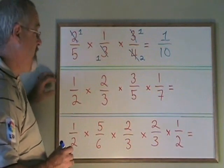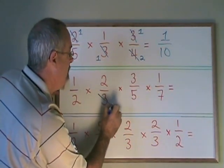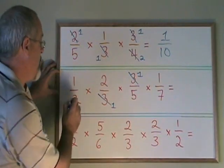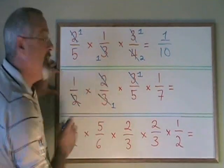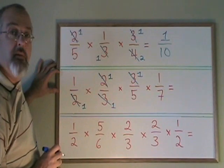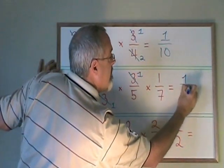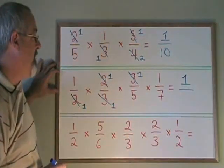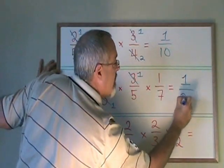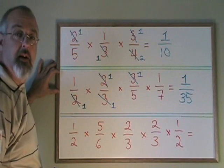The second example has four fractions. I see a 3 on the top and a 3 on the bottom, so I'm cancelling them, leaving 1s. I also see a 2 on the top and a 2 on the bottom, cancelling them and again leaving 1s. Now my numerators are 1 times 1 times 1 times 1 times 1, which equals 1. The denominators are 1 times 1 times 5 times 7, which equals 35. My final answer is 1/35, and it cannot be simplified further.